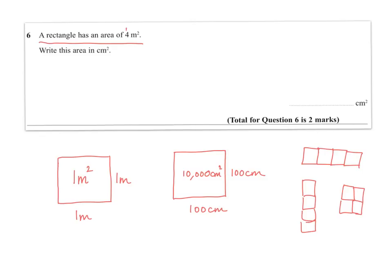But to cut to the quick, if we want an area of 4 meter squares, then we really want to have 4 of these, and 4 lots of 10,000 is 40,000 centimeter squares. So that's the explanation that I would give for question 6.